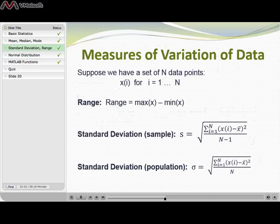Standard deviation is a lot more complicated to compute than range, but it's also a lot more useful than range in measuring the variation of data. And you can see I've got two different formulas for standard deviation here. One refers to sample and the other refers to population. They're almost the same but not quite.